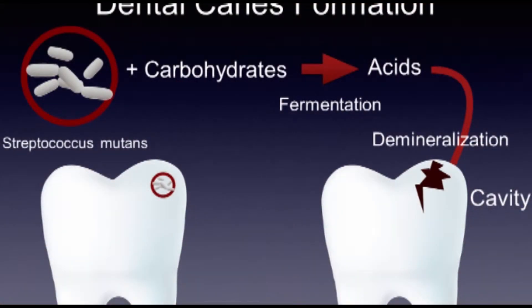Dental caries, one of the most common oral diseases in the world, is a bacterial infection causing demineralization and destruction of the teeth. The primary bacterium causing cavities is S. mutans. Here is our healthy tooth: S. mutans starts to grow on it and ferments the carbohydrates that we eat. The environment acidifies during fermentation, and the acids demineralize the tooth, leading to cavities.